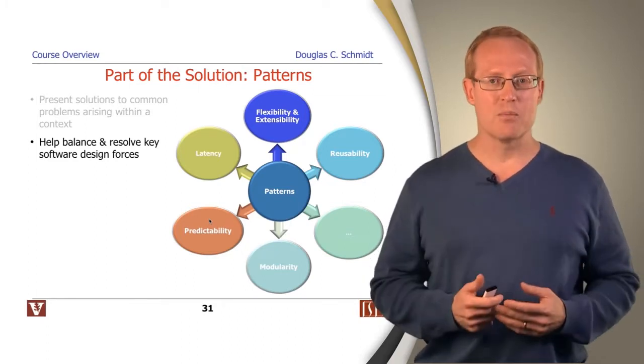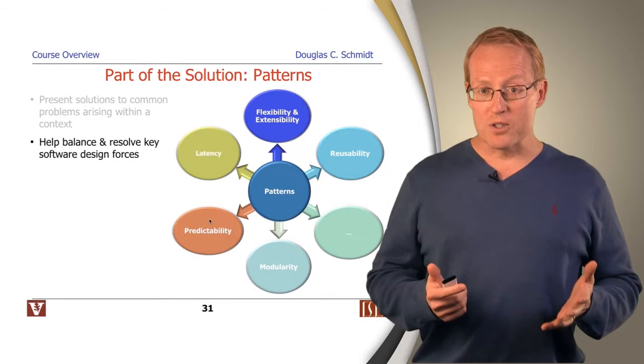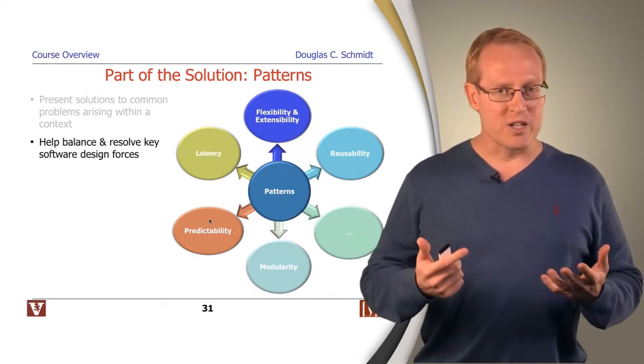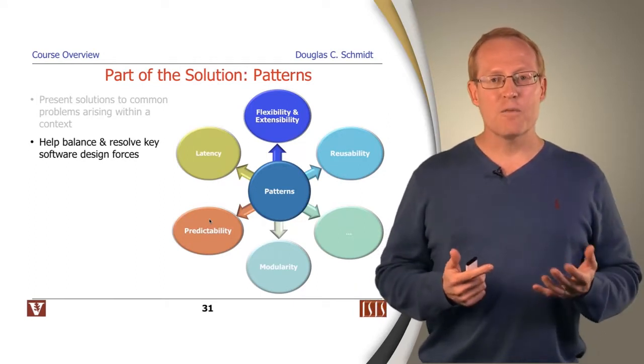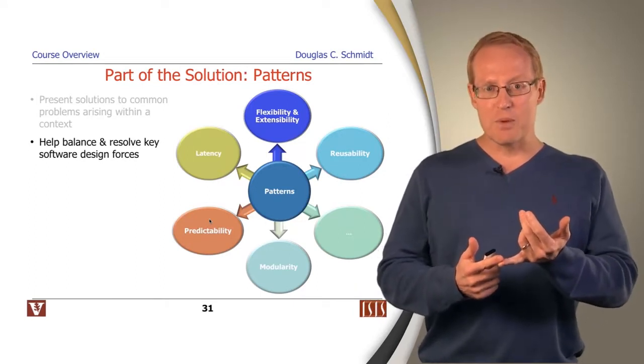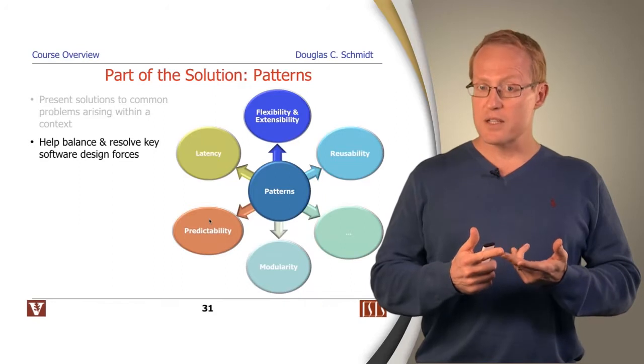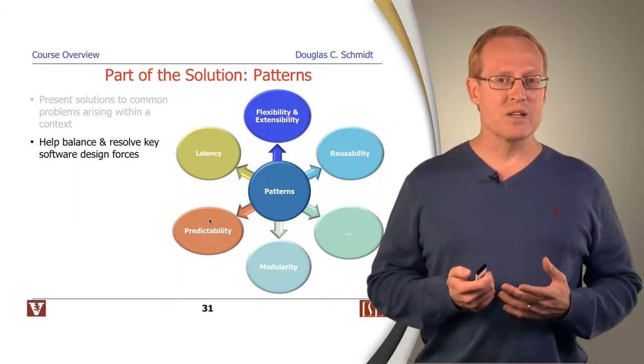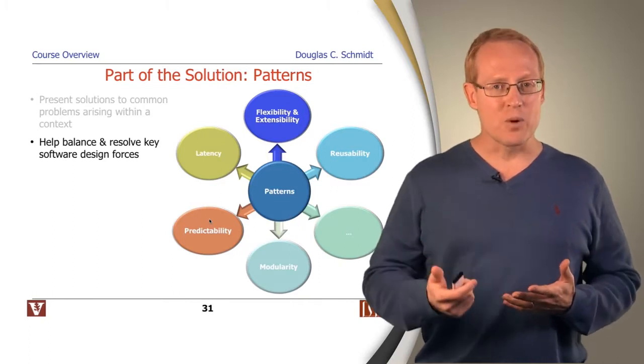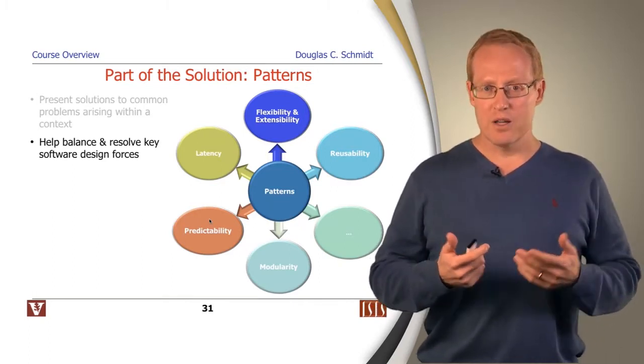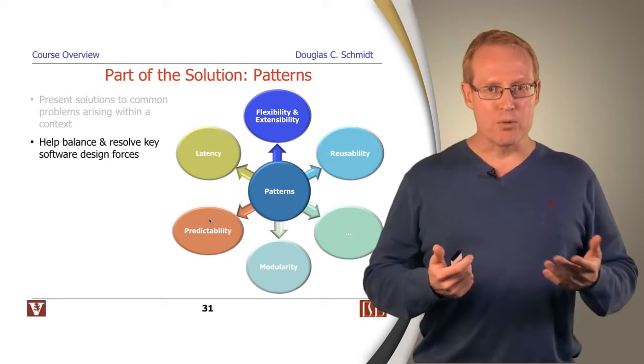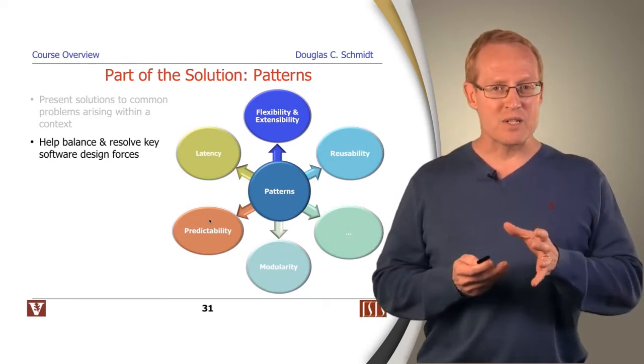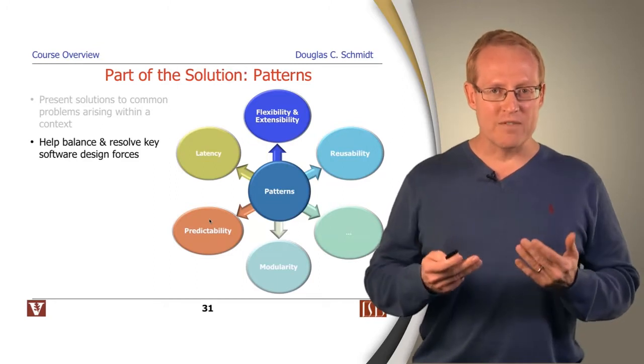When we build software, those forces also apply, but there's also some other ones that are more interesting from the point of view of software. There are forces like designing software to be modular or flexible and extensible, to be reusable. And often those forces need to be balanced and traded off against other forces, forces to make the software low latency or high throughput or predictable or dependable. Patterns help us navigate through that trade-off design space.